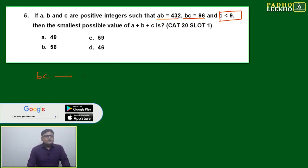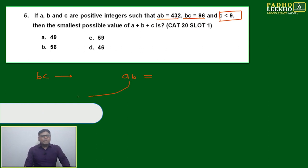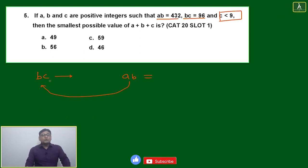If c is having restriction, then bc is having restrictions. ab is not having restrictions, but based on whatever value of b you get, that is going to affect bc. And bc is having certain restriction based on the value of c.